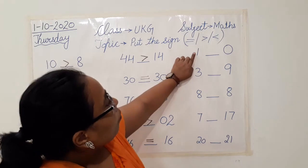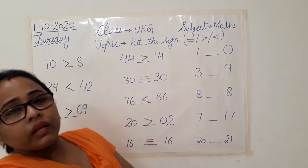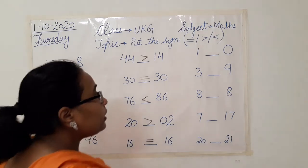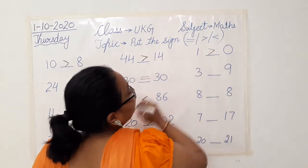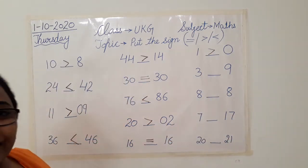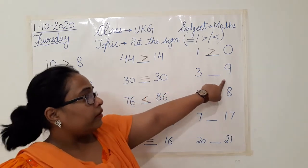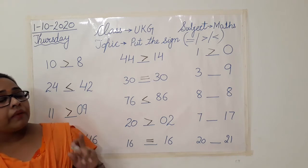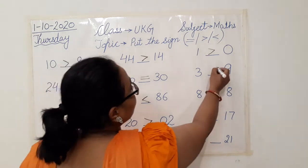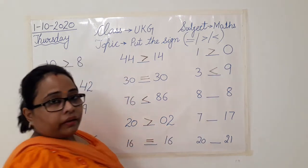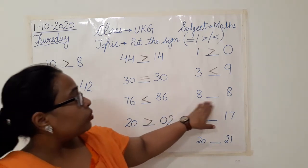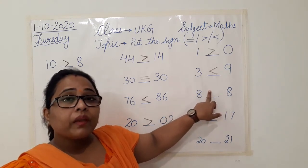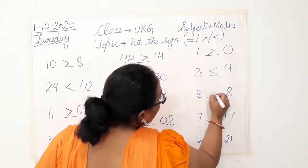Now we have one and zero. Towards which number are we going to put the sign? One is greater, so the crocodile will move towards one. Then three and nine — first compare them and tell me which is greater. Nine is greater. So we will put the sign like this. Then eight and eight — the two numbers given are both eight. What sign do we put? Equal to sign. Very good class. So like this we will put an equal to sign here.